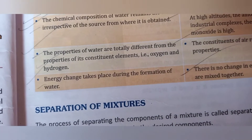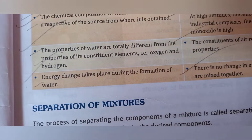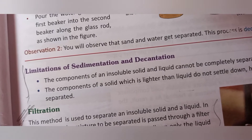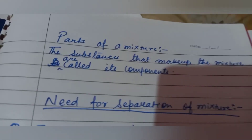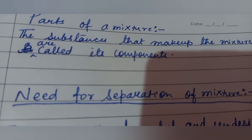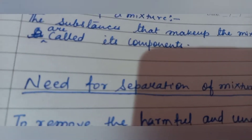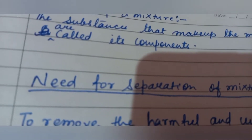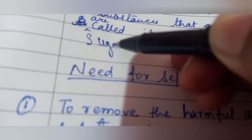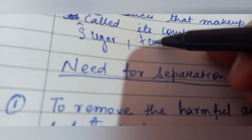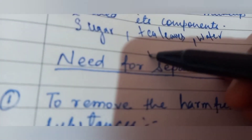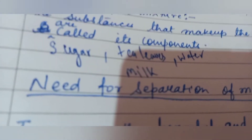Now we come to the section of separation of mixtures. What is the need for separating the mixtures, how are different mixtures separated, and what is the principle? Let us see the components of the mixture. The substances that make up the mixture are called the components of the mixture. For example, tea is a mixture — the sugar, tea leaves, water, and milk are the components of the mixture.